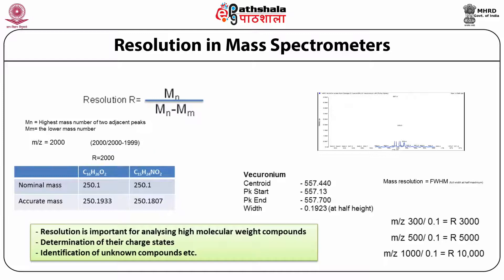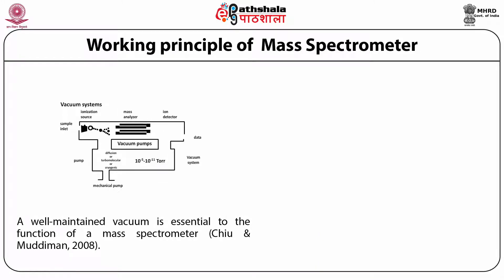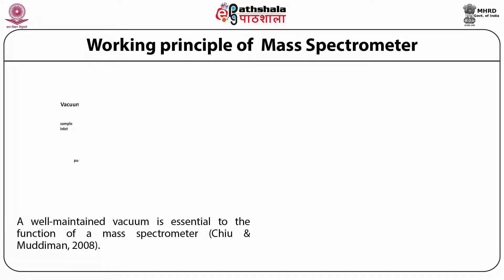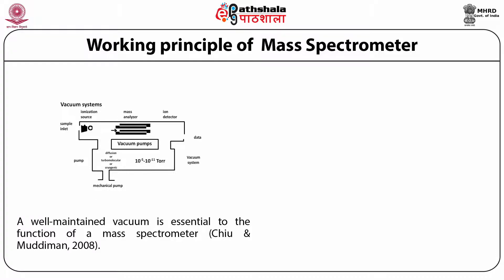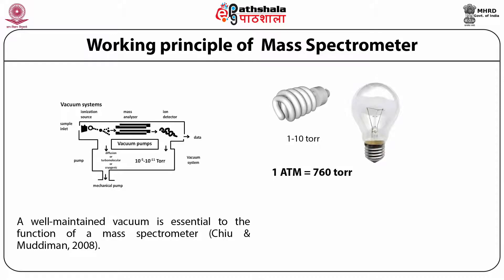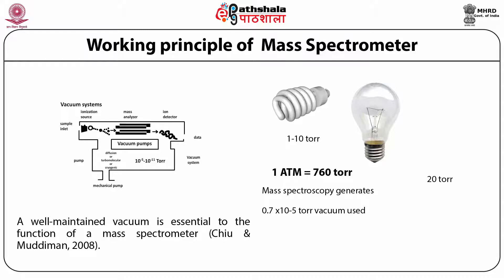Resolution is important for analyzing high molecular weight compounds, determining their charge state, and identifying unknown compounds. Now, looking at the working principle inside the mass spectrometer: the instrument is kept in very high vacuum. By comparison, a fluorescent tube light uses about 1 to 10 Torr vacuum, whereas for mass spectroscopy the vacuum required is 0.7 × 10⁻⁵ Torr — a very high vacuum essential for ions to travel and be analyzed.